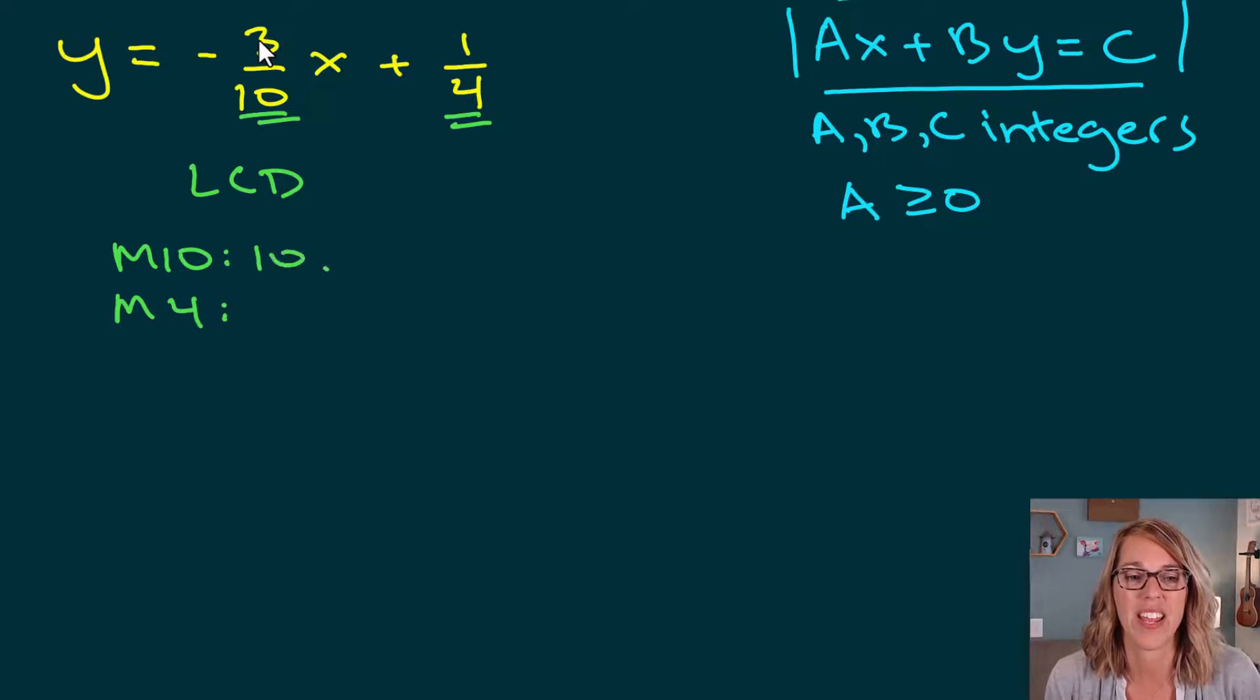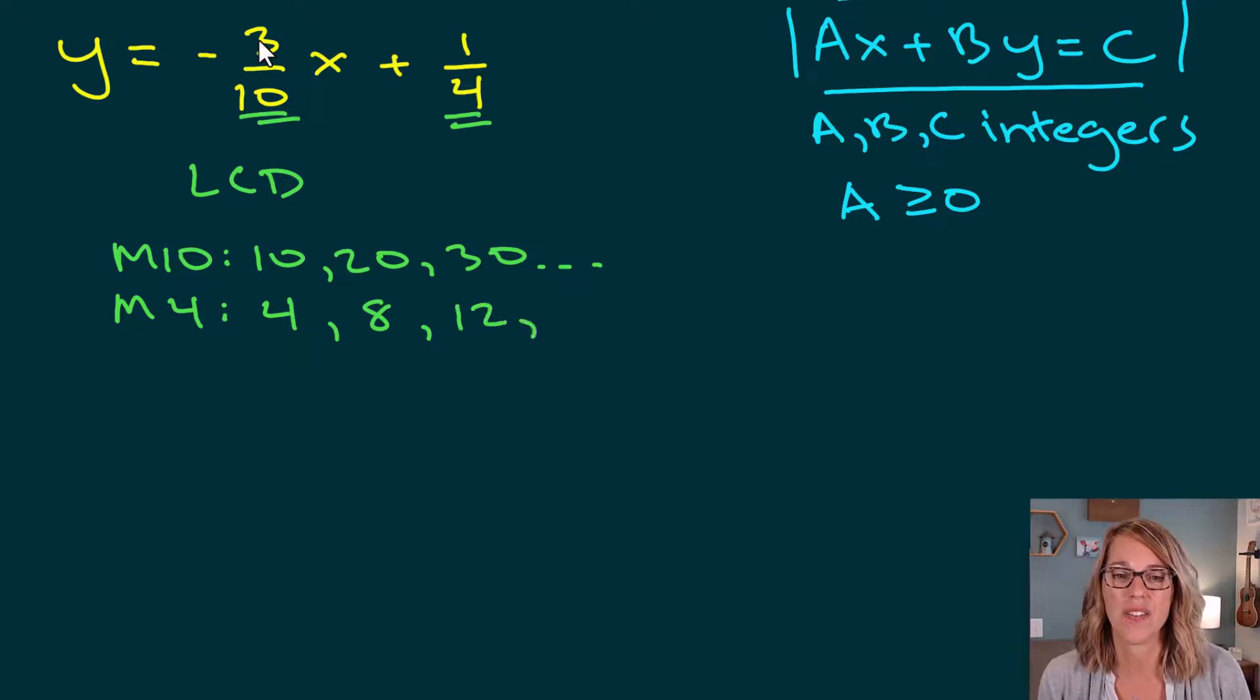Okay, multiples of 10. That would be 10, 20, 30, and so on. Just multiplying 10 by 1, 2, 3, and so on. Multiples of 4 would be 4 times 1 is 4, 4 times 2 is 8, 4 times 3 is 12, 4 times 4 is 16. Oh, and there's 20. So I found that common denominator. And that common denominator is equal to 20.